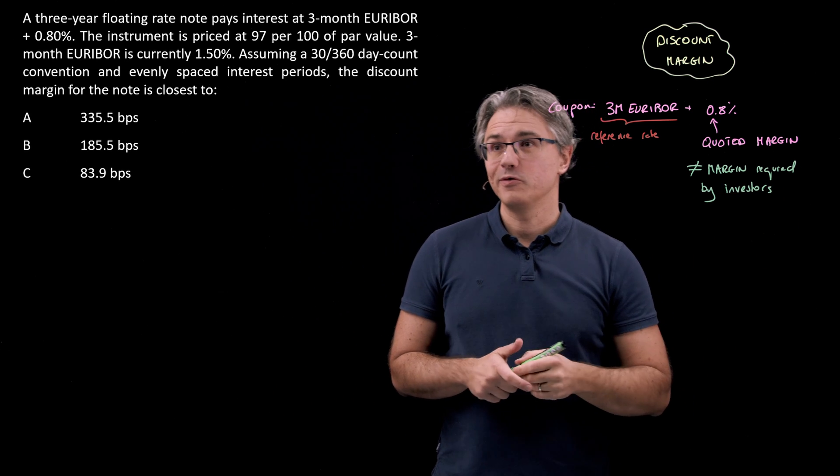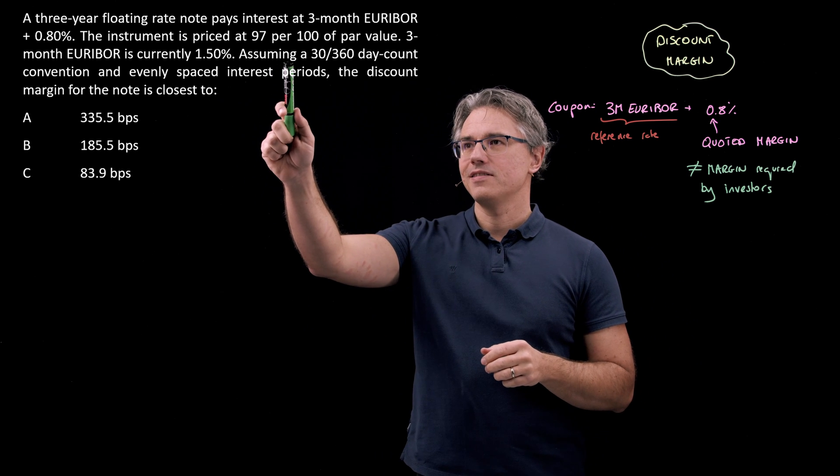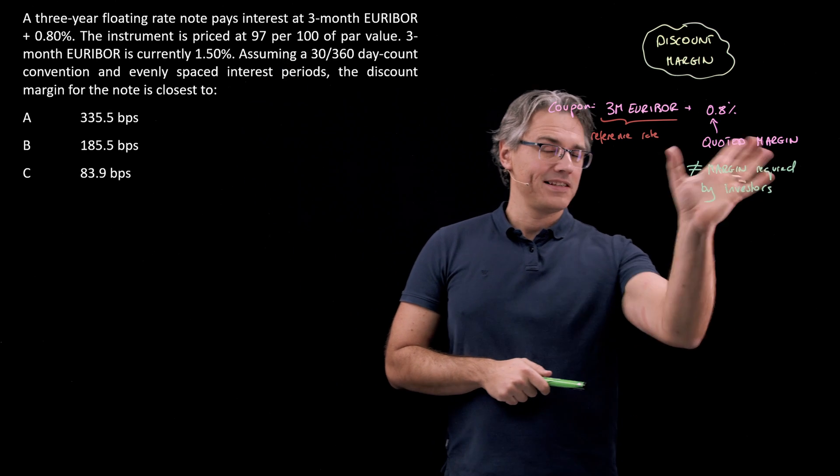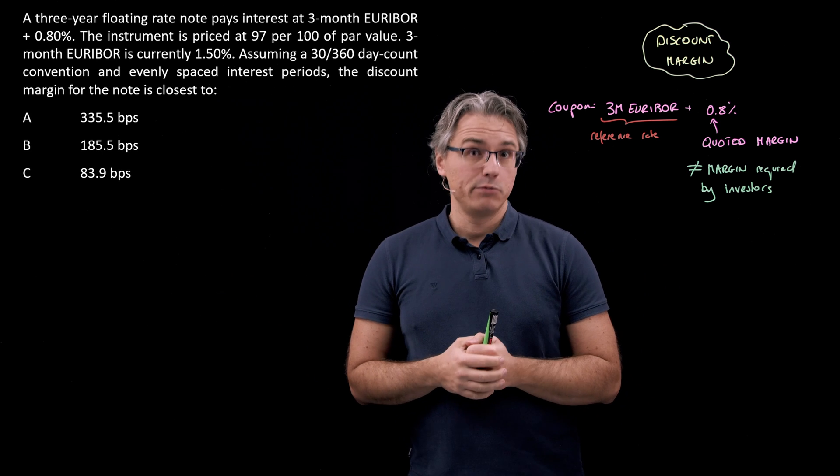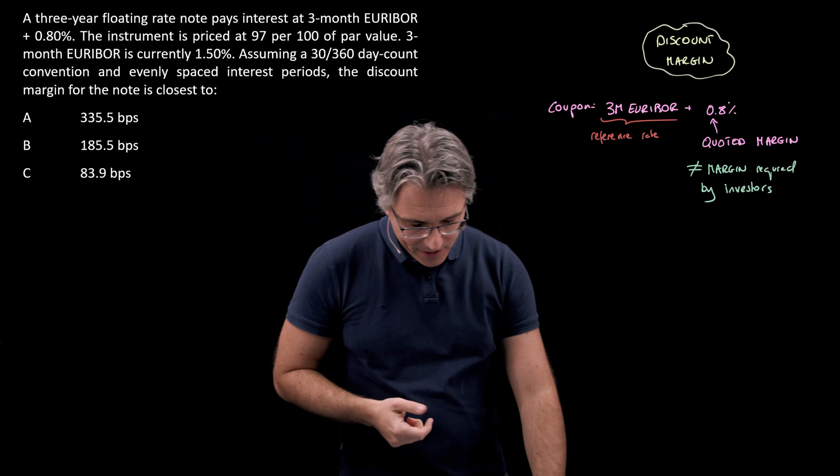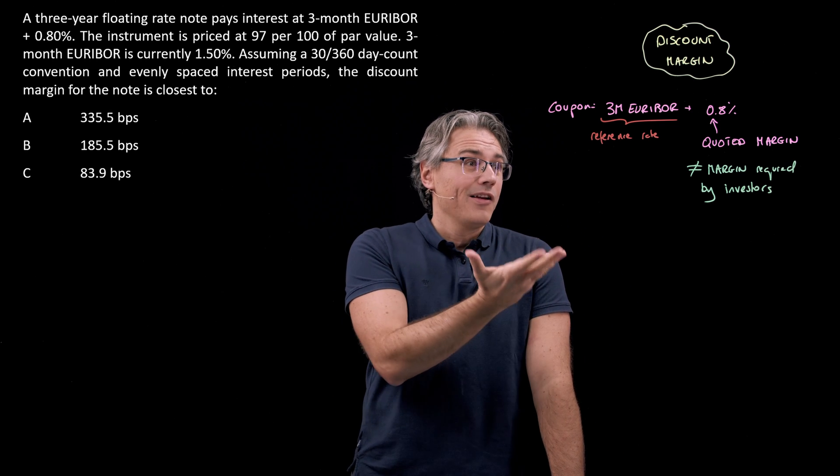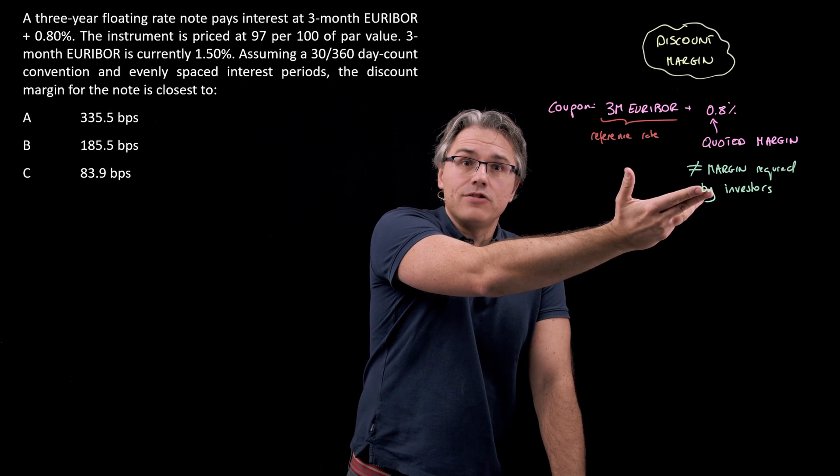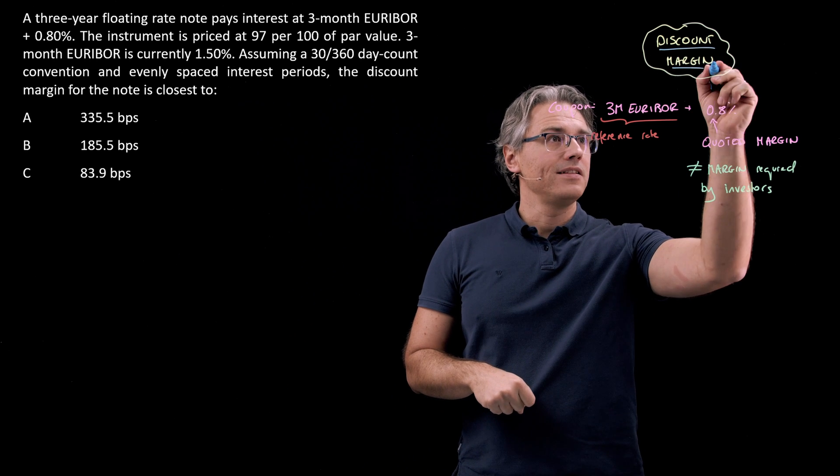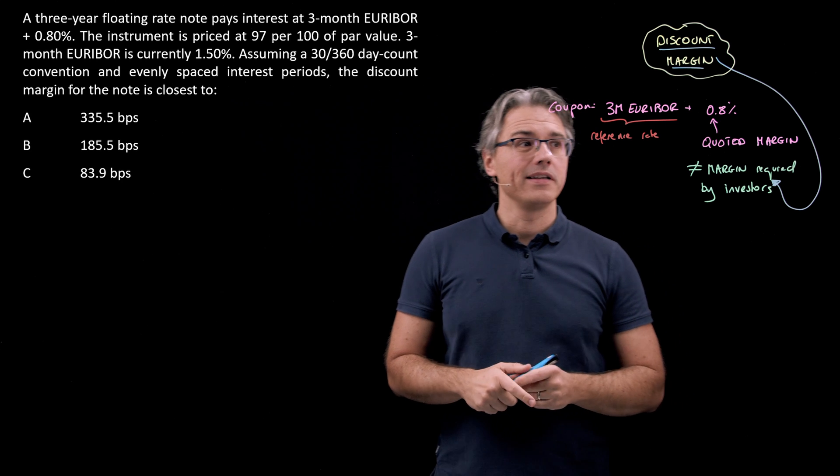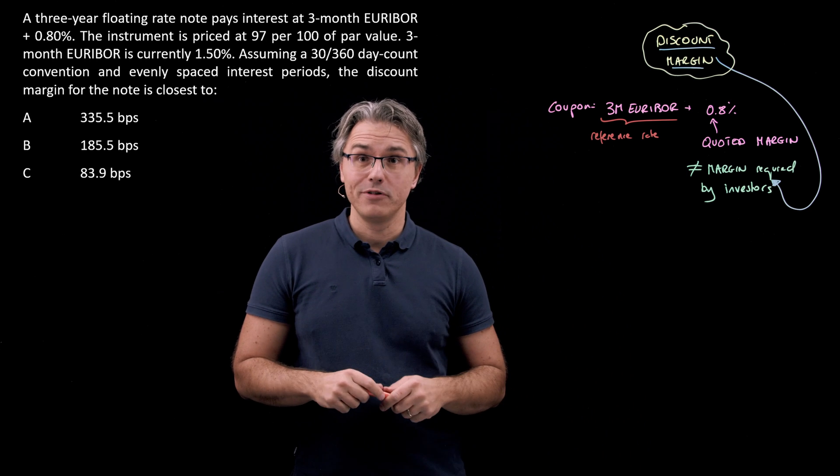The way we know that this is not equal is because this instrument is priced at just 97 per 100 of par value. If this quoted margin were equal to what's required by investors, the security would be priced at close to or equal to 100. It's not. Because the instrument is priced below par value, we know this relationship holds. This question asks us to compute the discount margin, which is basically the margin currently required by investors. We can do this mathematically using the time value of money worksheet.